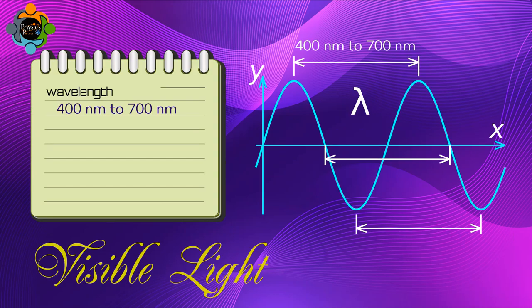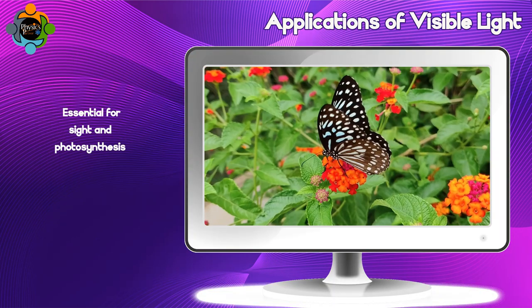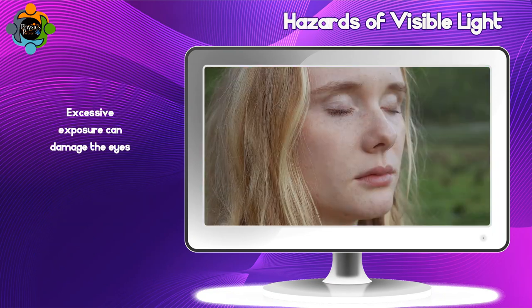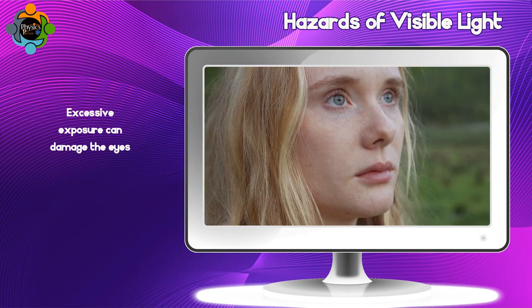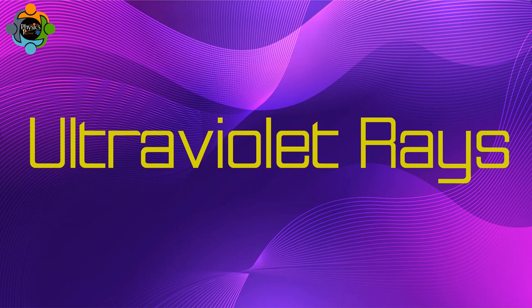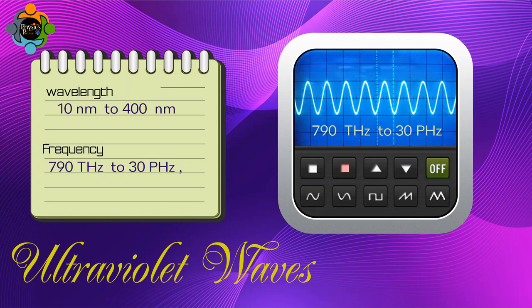Visible light — the only part of the spectrum we can see — ranges in wavelength from 400 to 700 nanometers and has a frequency range of 430 to 790 terahertz. It's essential for sight and photosynthesis, but excessive exposure can damage the eyes.